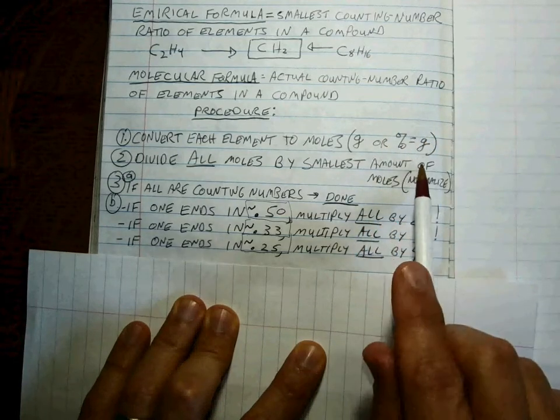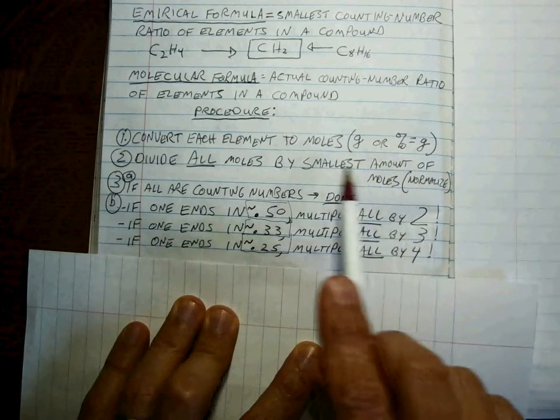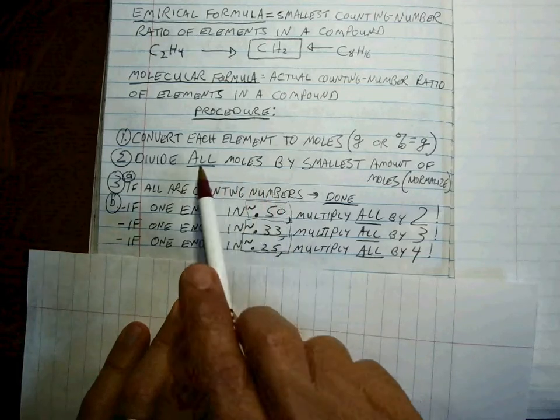turn the percentage into grams. Because it's simpler that way, and if you have 67% of one element, and you had 100 grams of that element, then you'd have 67 grams of that element. So it's simple. If you see percentage, make it grams. And once you're at grams, you know how to get to moles. That's a periodic table.